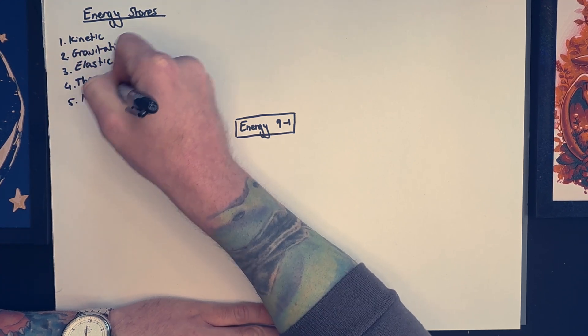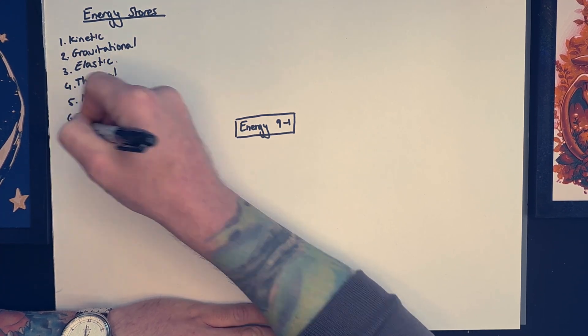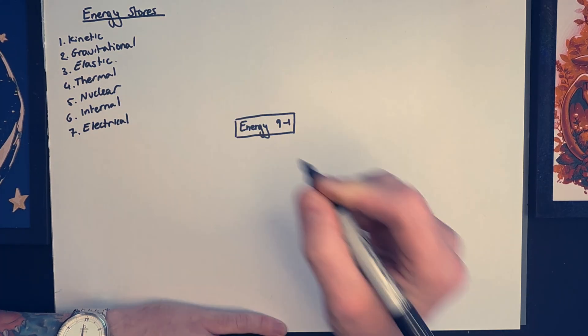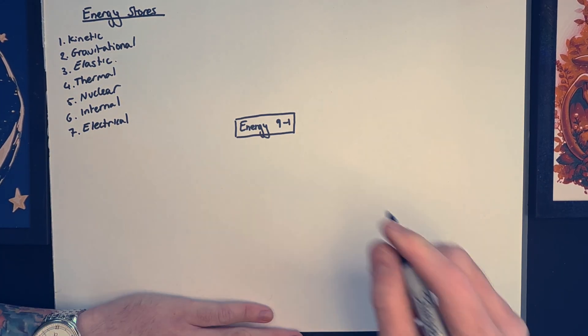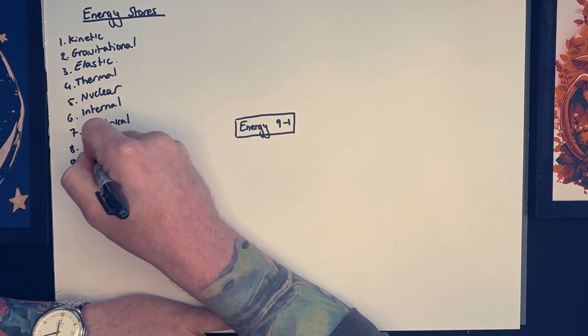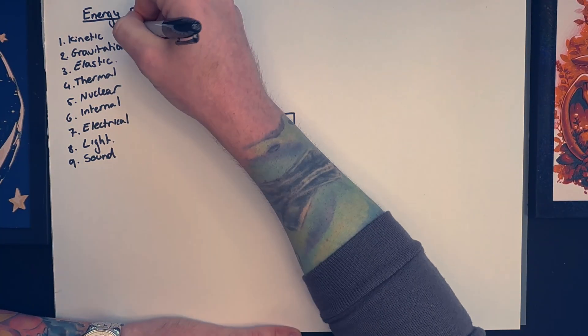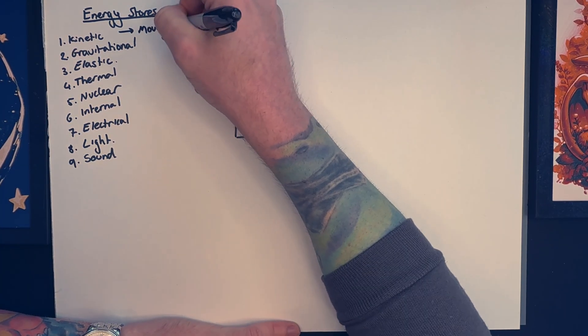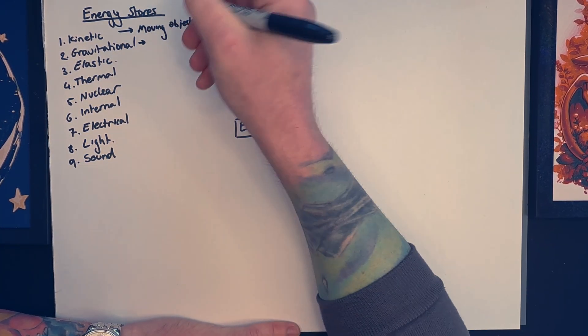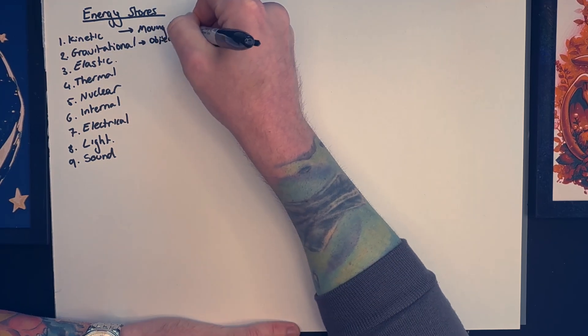So that's kinetic energy, gravitational potential energy, elastic energy, thermal energy, nuclear energy, internal energy, electrical energy, light energy, and sound energy. Kinetic energy is the energy stored in moving objects, whereas gravitational potential energy is the energy stored in objects with mass above the surface of the earth.